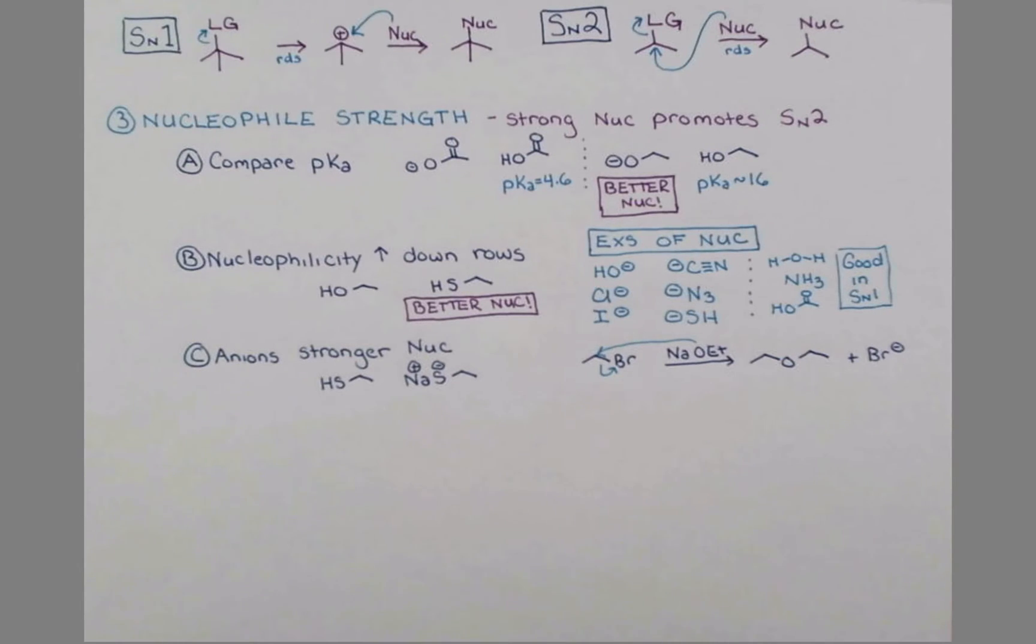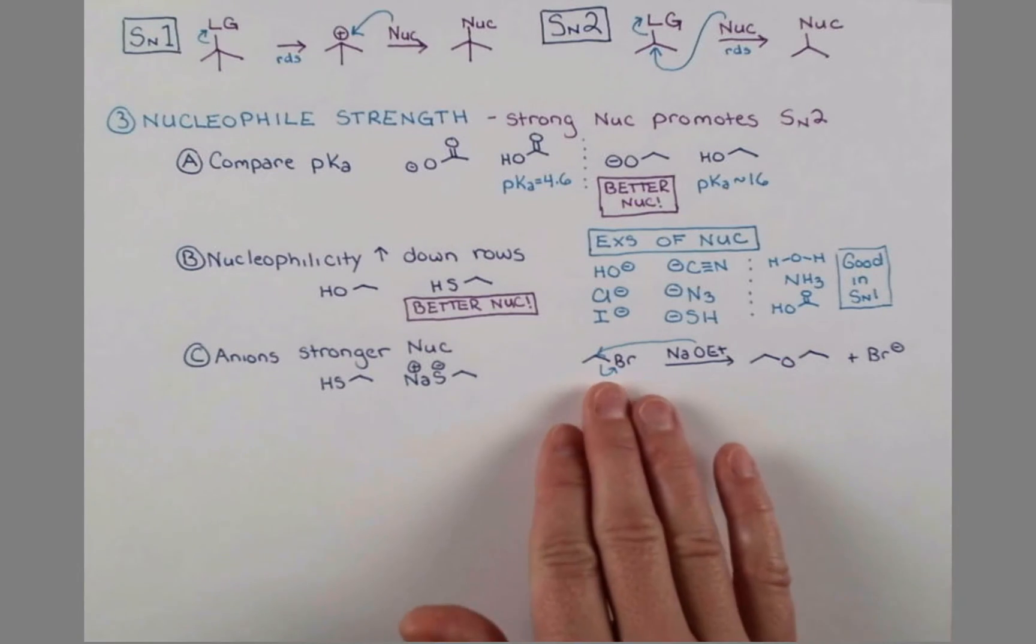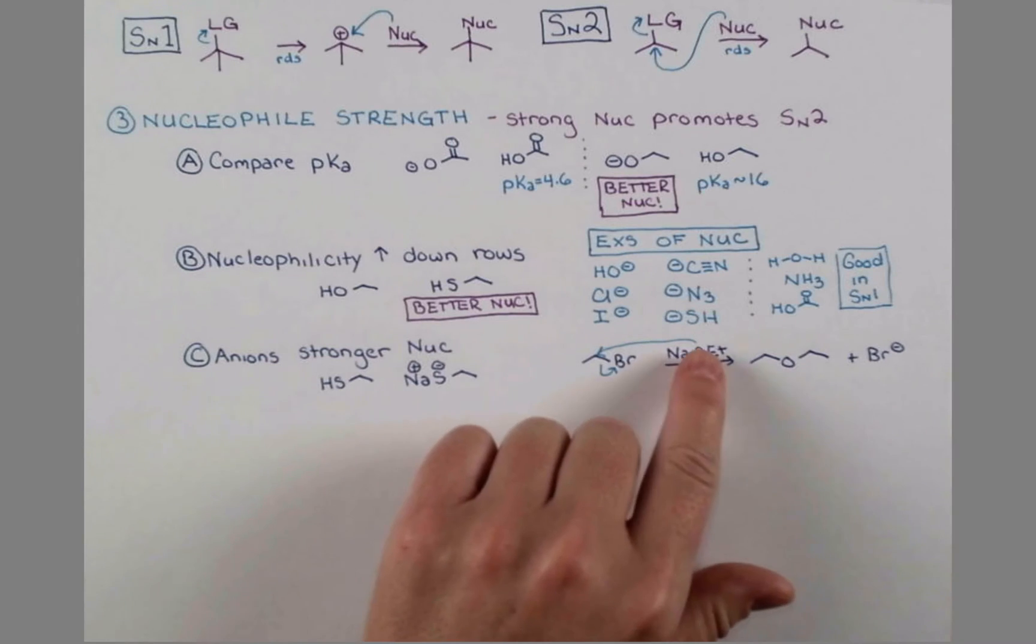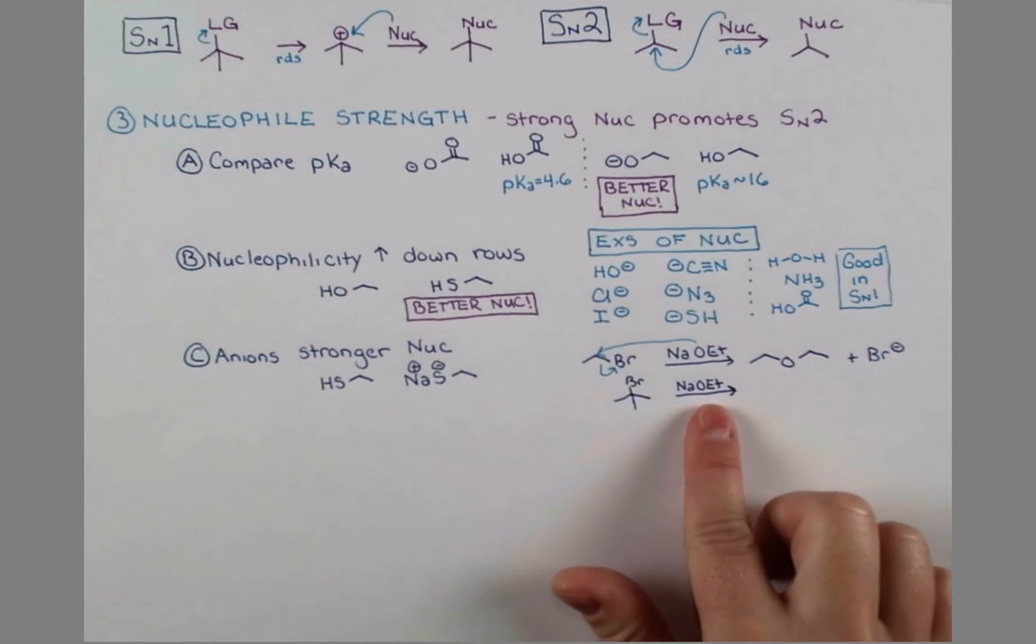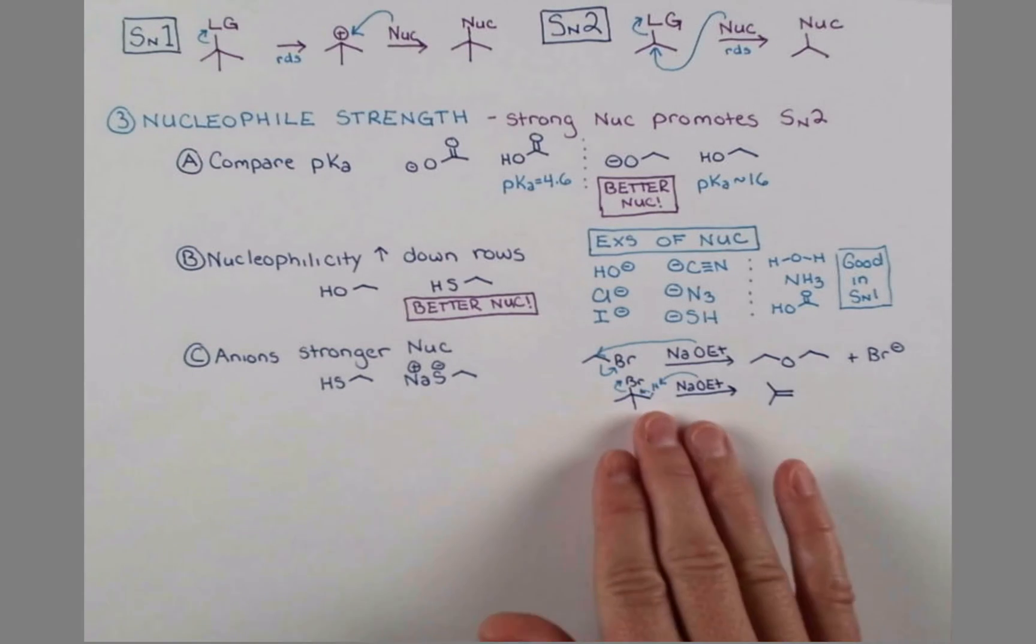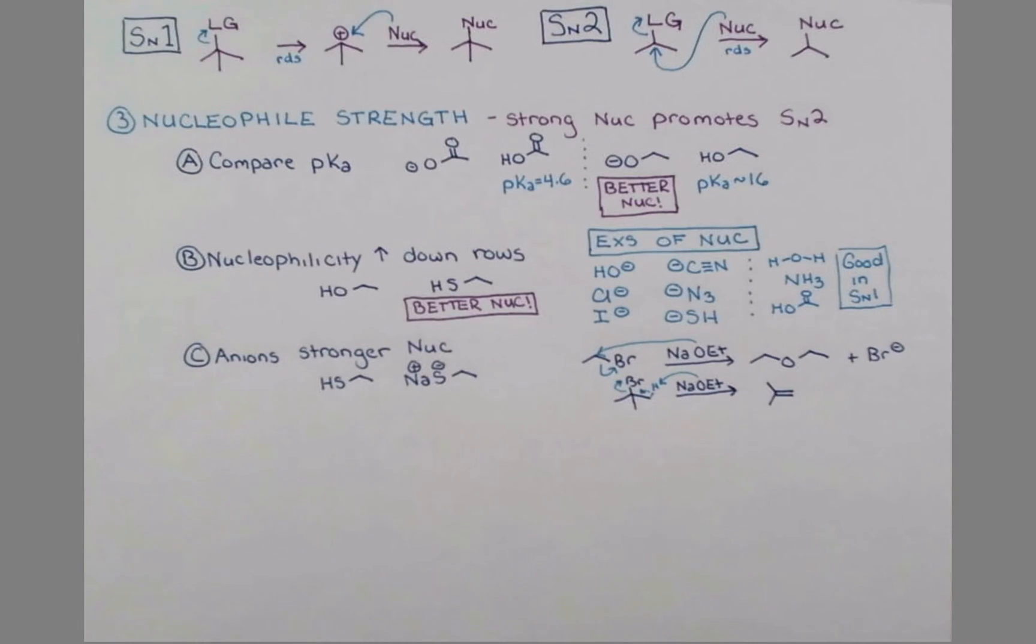However, with branched halides, there's something I need to tell you. So if this substrate was secondary, or actually even tertiary, this is a strong base, and strong bases can actually promote a different reaction that competes with substitution called elimination. Instead of substituting, the sodium ethoxide is going to abstract a proton from this substrate, and this will form an alkene. Elimination reactions compete with substitution reactions. If you thought SN1 and SN2 was bad enough, we have another whole reaction pathway going on. But that's a topic for a different video.